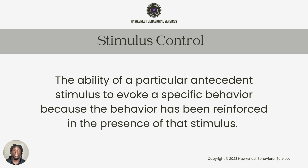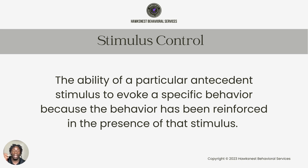Some examples of specific antecedent stimuli having control over our behaviors: you see the big yellow M — if you're hungry and you pass by a restaurant with a big yellow M and you're a fan of McDonald's, you turn into the parking lot to get your McDonald's because you see that big yellow M. If you didn't see that big yellow M, you wouldn't have turned into that parking lot because there's no stimulus evoking that behavior.